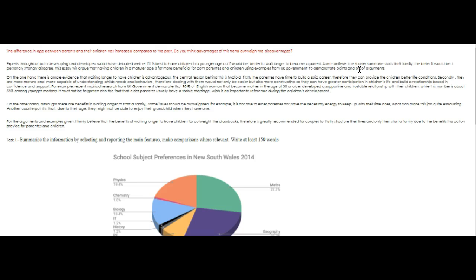On the one hand, there is ample evidence that waiting longer to have children is advantageous. The central reason behind this is twofold. Full stop here. Firstly, parents — without the E — have time to build a solid career. Therefore, they can provide the children better life conditions. What do you mean by this? Do you mean more wealth, more education, more time with their children? When you say 'better life conditions,' you really do need to explain it.